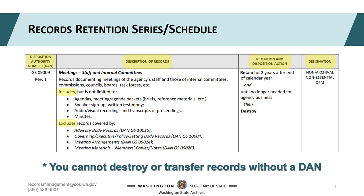The Description of Records field is where you can expect to spend most of your time. It describes the business function and type of record that falls under that DAN, including descriptions and examples of records included and excluded in that business process. This can seem confusing at first, but knowing what types of records are included as well as excluded will help you identify the correct series. Your record may still fall under that DAN if it matches the description but isn't specifically identified in the included list, because different agencies often call the same document by a different name.